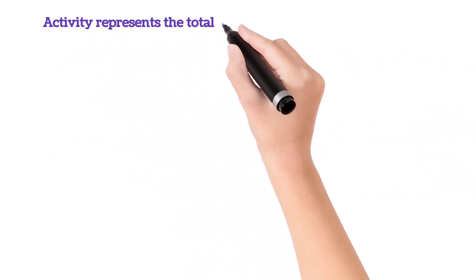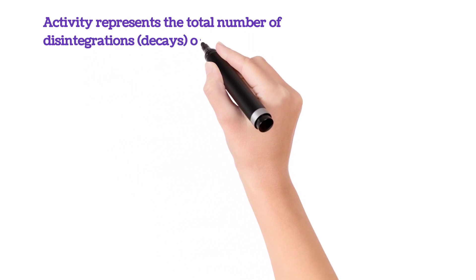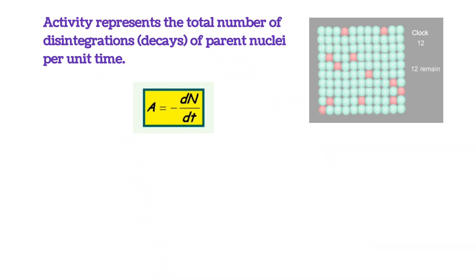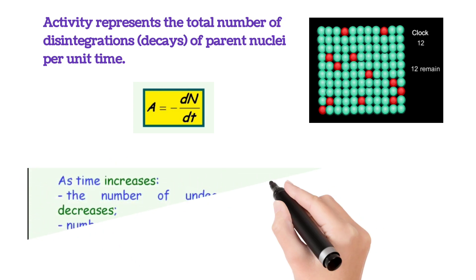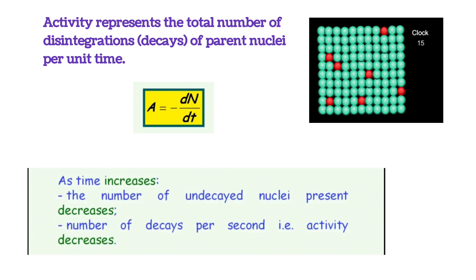Activity represents the total number of disintegrations of parent nuclei per unit time. As time increases, the number of undecayed nuclei present in the radioactive sample decreases. Hence, the number of decays per second, meaning the activity of the sample, decreases.